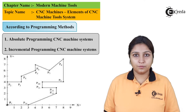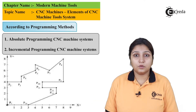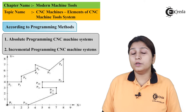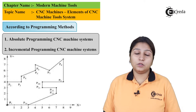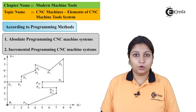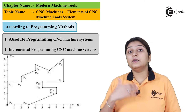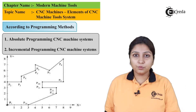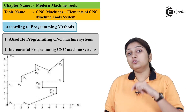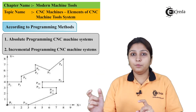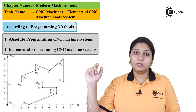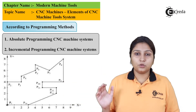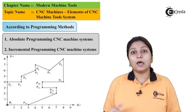In an incremental control system, the Cartesian coordinates do not follow the zero comma zero or absolute mode. Instead, it increments — from the first point it goes to the second, then to the third, fourth, fifth, and so on. The ordinates and the axes are also incrementing with each step.